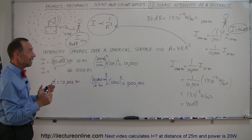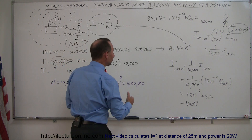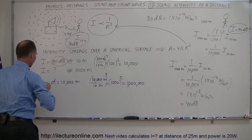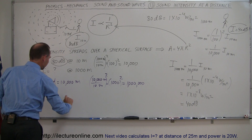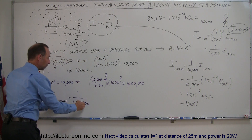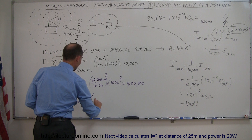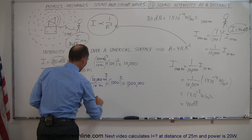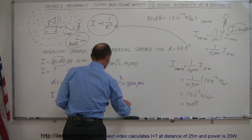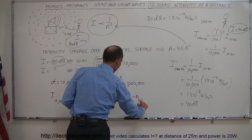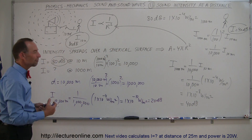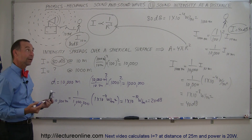Because it's 1,000 times as far away, 1,000 squared is a million, so we divide the intensity at 10 meters by a million. The intensity at 10,000 meters equals 1/1,000,000 times 1 × 10⁻⁴ watts per square meter, which equals 1 × 10⁻¹⁰ watts per square meter, and that's equal to 20 decibels. That's how sound intensity fades as you go further and further out.